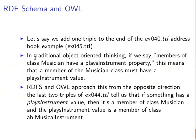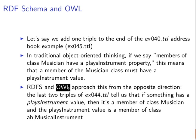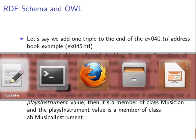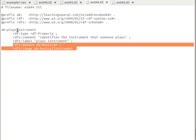Usually whenever we think about classes in the object-oriented way — if we say members of, for example, class Musician have a 'play instrument' property — what that means is whenever we instantiate, whenever we create a new instance of that class, they need to have a value for the 'play instrument' property. In RDFS and OWL, in this sort of idea of ontology design, the idea is the other way around. Let's have a look at the last two triples of example 044 to make it clearer.